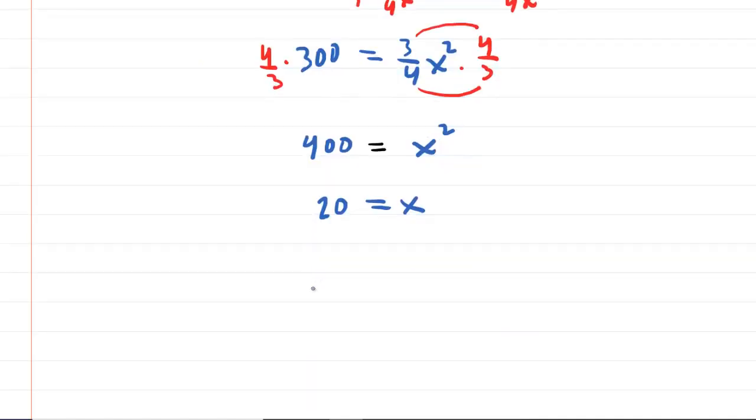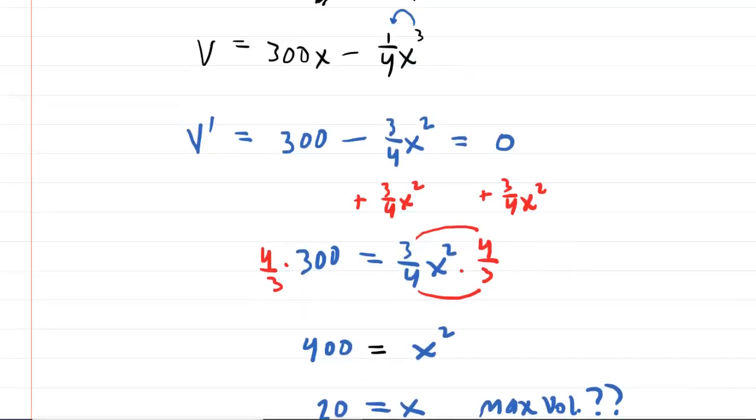Now, we may, depending on our professor's requirements, have to prove that this actually does maximize the volume. And so one way of proving or showing that this value of X maximizes the volume is to use the second derivative test. So basically, with the second derivative test, you're going to take your derivative, which we obtained here.